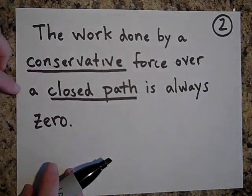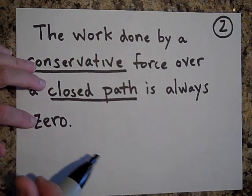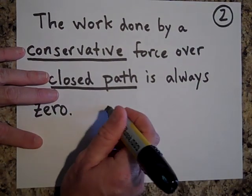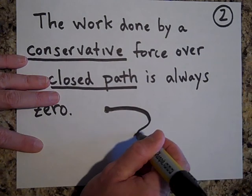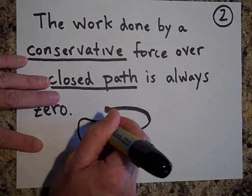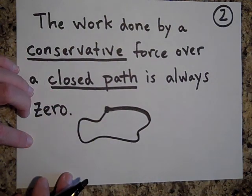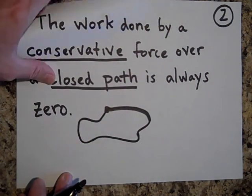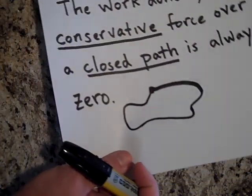What is a closed path? A closed path is a path that starts and ends at the same point. For example, if I start here, trace a loop like this, and come back to where I began — that is a closed path.